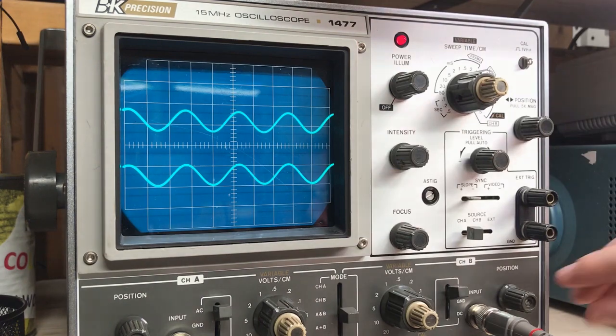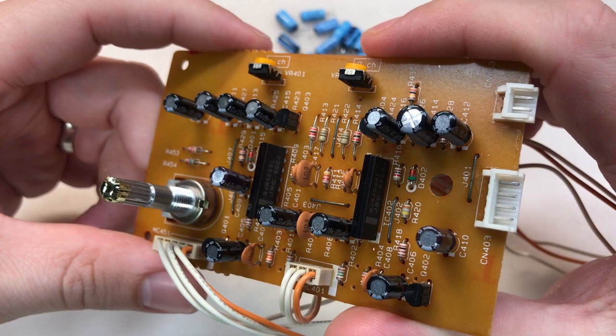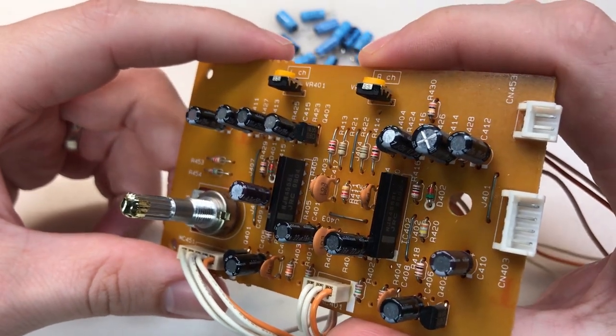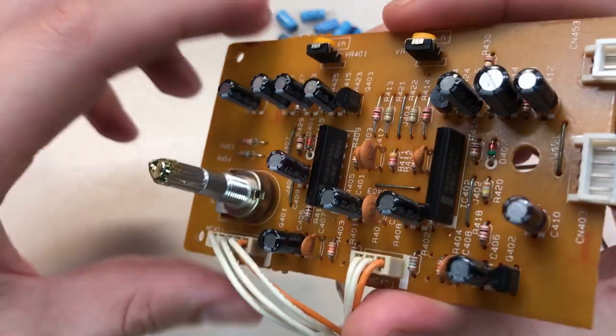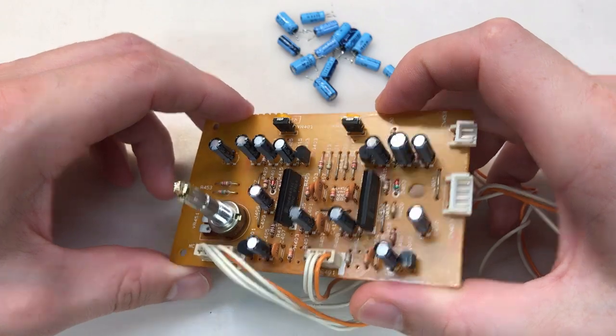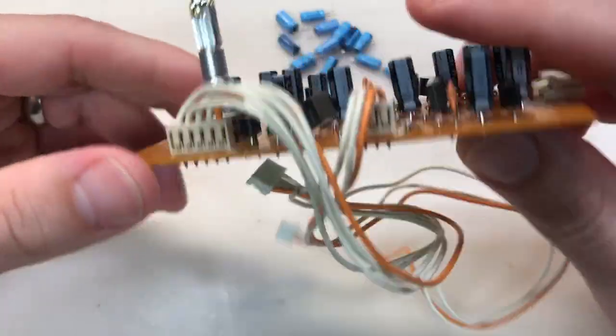Here's the board that sends the signals from each channel to its respective meter, as well as controls the intensity to the bulbs. As you can see, I've already recapped this. There's not much to show on this board, so let's move on.